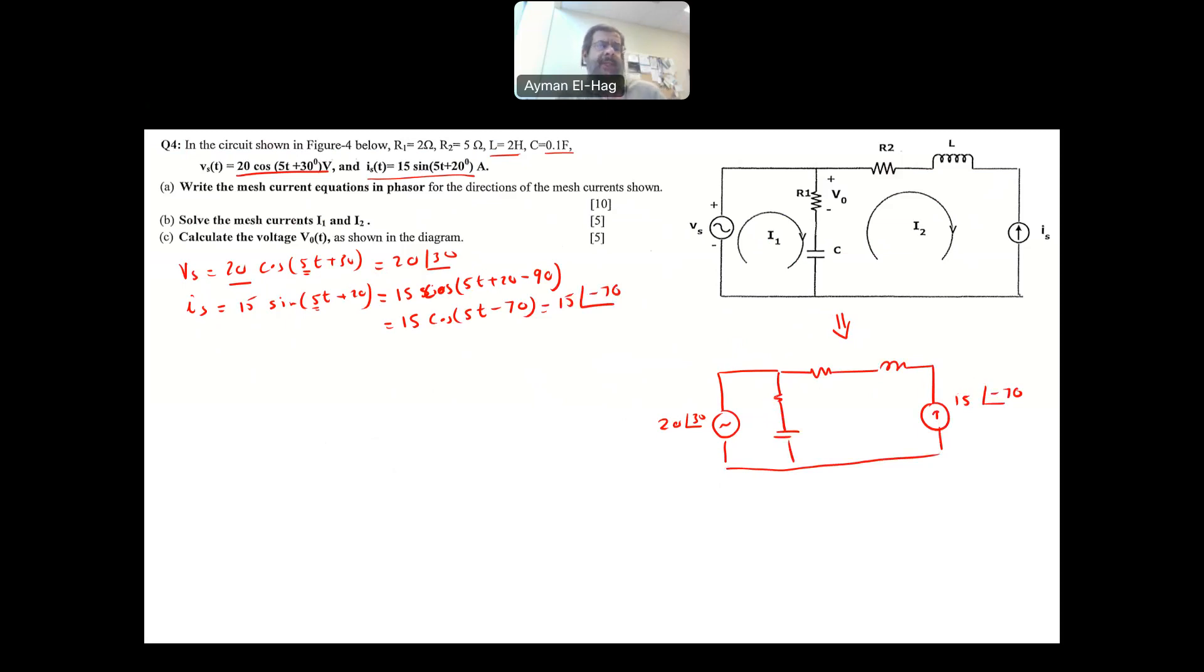This equals 15 cosine 5t minus 70, which equals 15 angle of minus 70. Now let's come to the resistor. I put them as they are: this is 2 ohm, and this is 5 ohm. Then we have the capacitance and the inductance. C equals 0.1 farad, which equals minus J over omega C. Minus J over omega, we have it from the supply, equals 5, and C is 0.1. So this equals minus J2. For the inductor, it equals 2, it is J plus J omega L, J times the same frequency 5 times 2, and this equals J10. So this is J10.